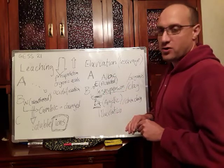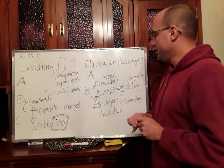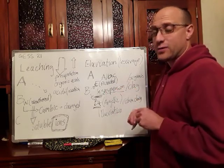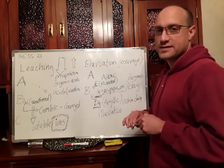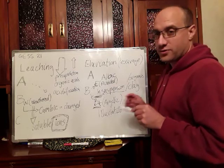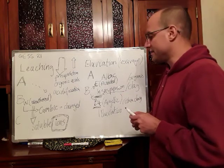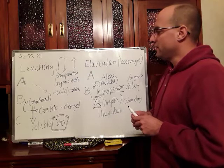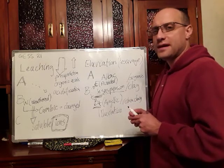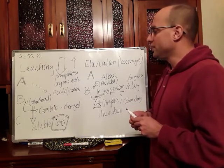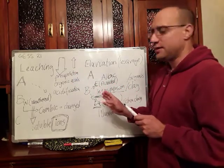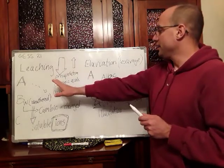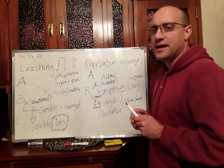Why I say this? Because the albic and the eluviated horizon will appear in another process, another soil translocation process, which is podzolization. So I can say that podzolization is going to be pretty much a kind of combination of leaching and eluviation.